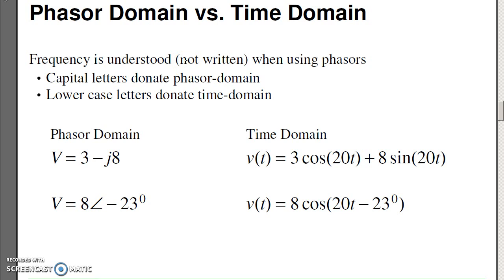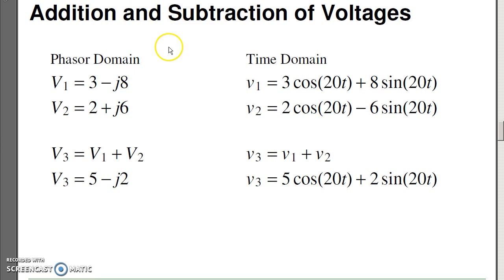We've got two domains. We've got the phasor domain and time domain. Time domain is what we're used to. It's how you represent sine waves as 3 cosine 20t plus 8 sine 20t. The 20 is the frequency in radians per second. To represent this in phasor domain, what I do is the real part means cosine minus j means sine. So 3 cosine plus 8 sine has the phasor representation 3 minus j8. The real is cosine minus j is sine. If you prefer polar coordinates, the time function 8 cosine 20t minus 23 degrees is represented as 8 at angle minus 23 degrees.